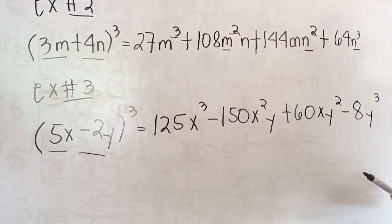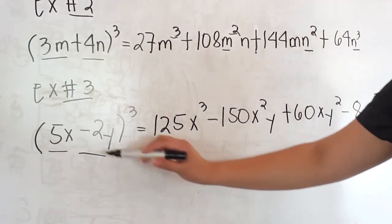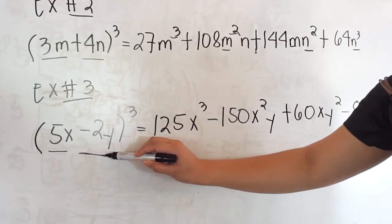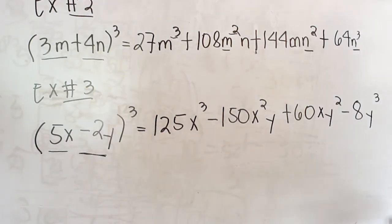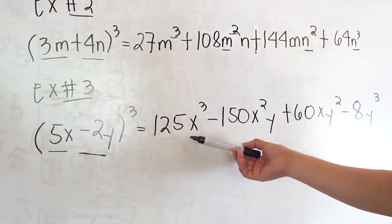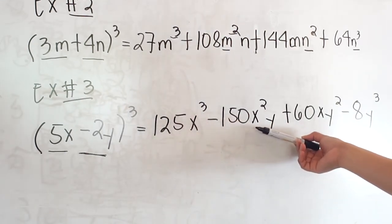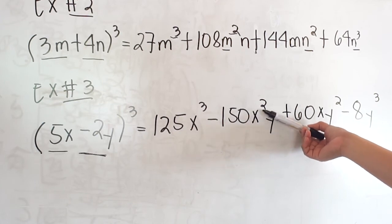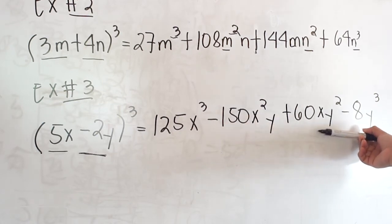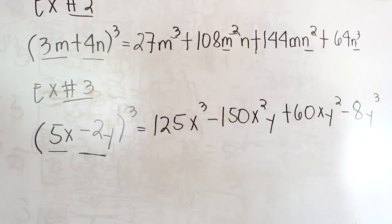The last rule is cube the second term, which is negative 2y. That results in negative 8y cubed. So the final answer is 125x cubed minus 150x squared y plus 60xy squared minus 8y cubed.